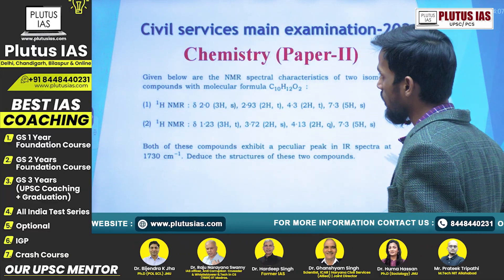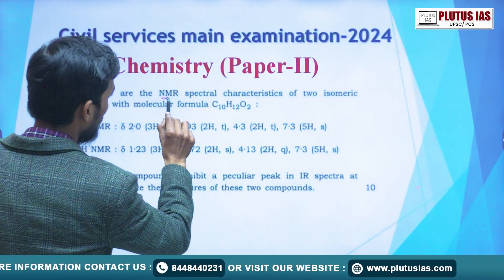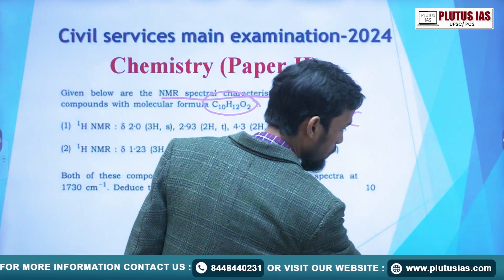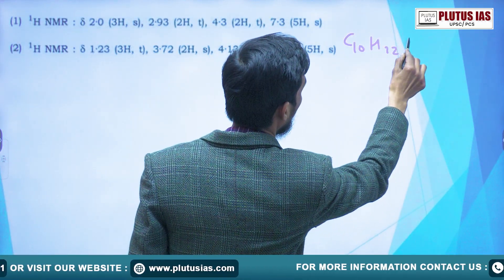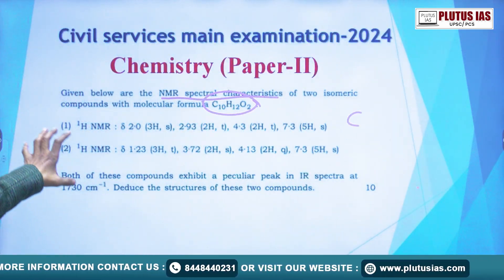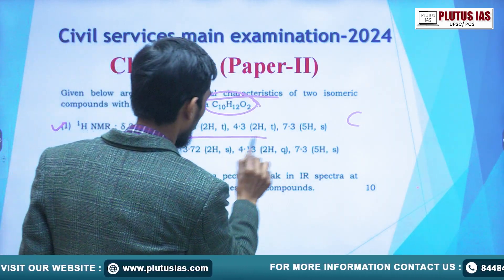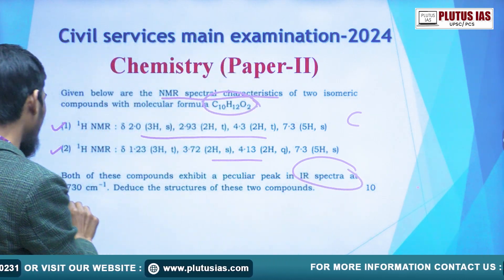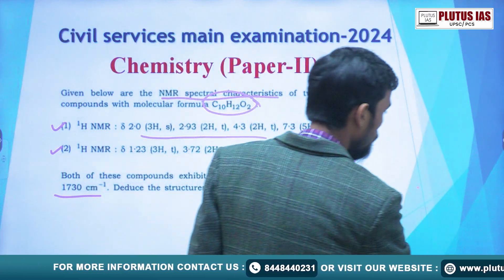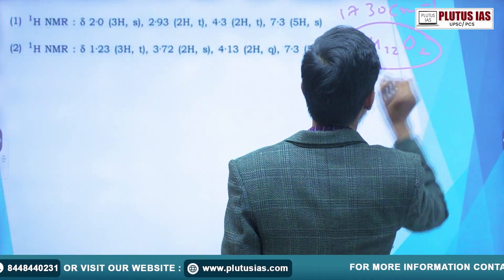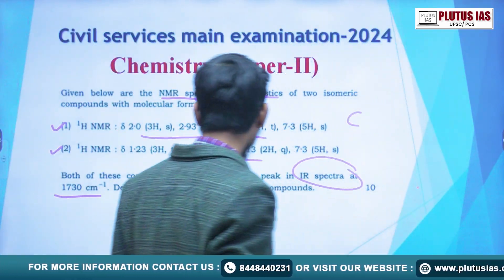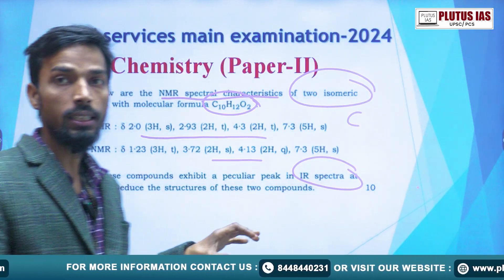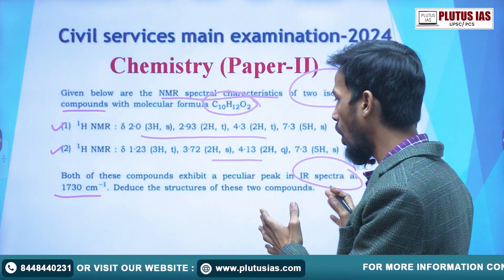In this question, we are given NMR spectral data of the compound C10H12O2. The molecular formula is given and there are some NMR signals. Both compounds exhibit a peculiar peak in IR — the IR peak is coming at 730 wavenumbers (cm⁻¹). These two are isomeric compounds and we have to deduce the structure of these compounds.